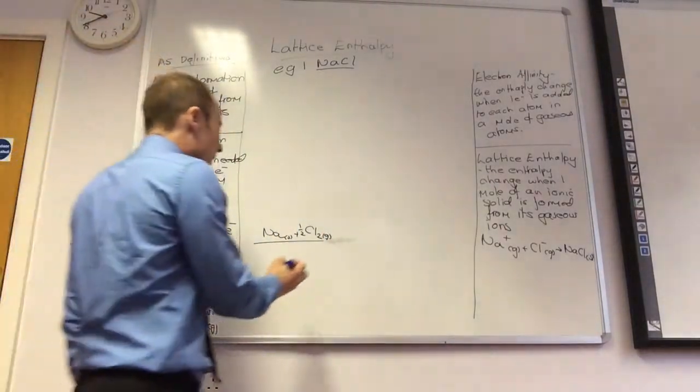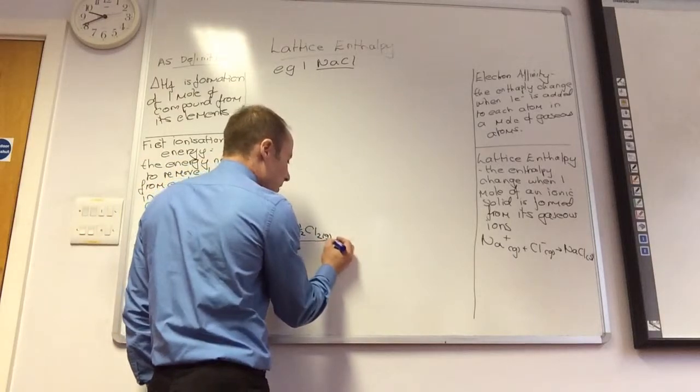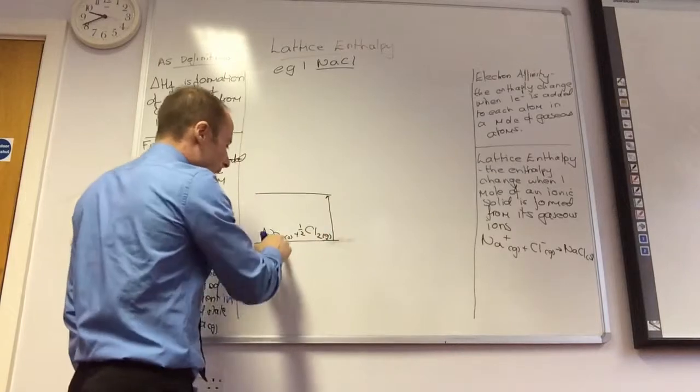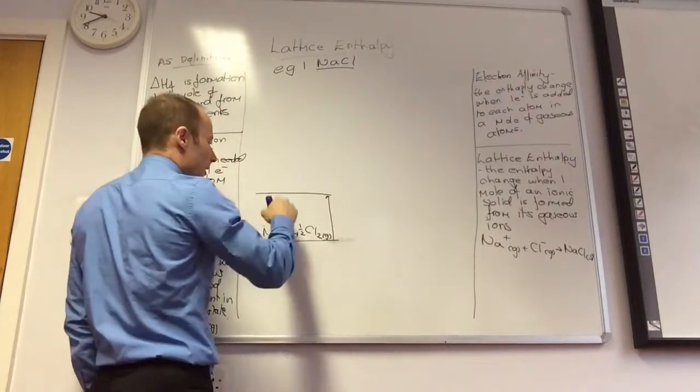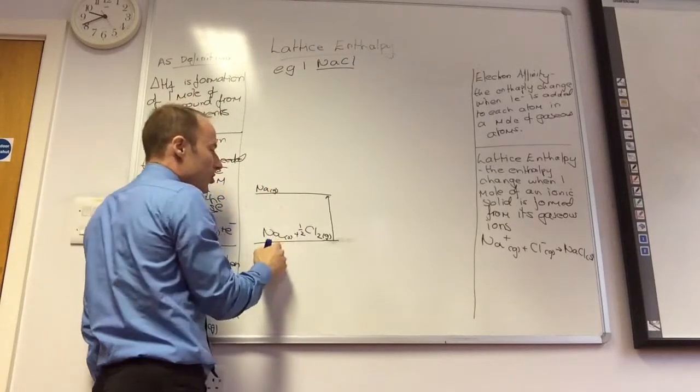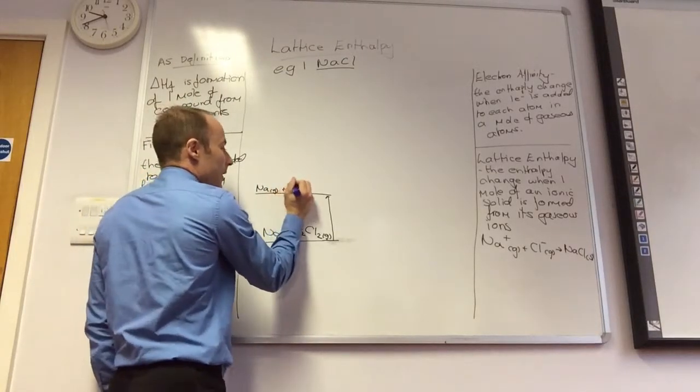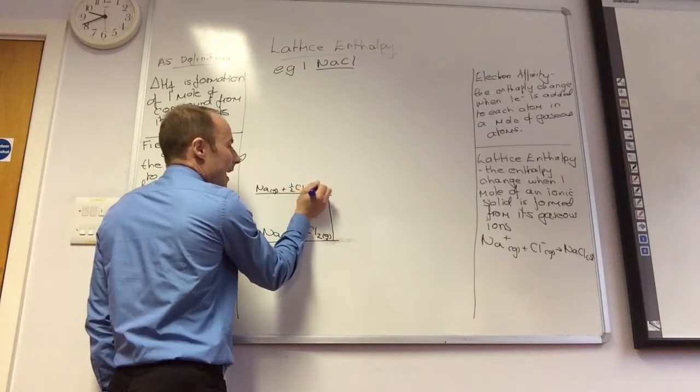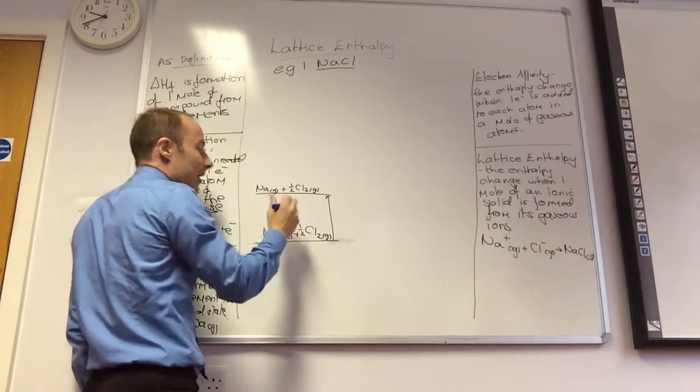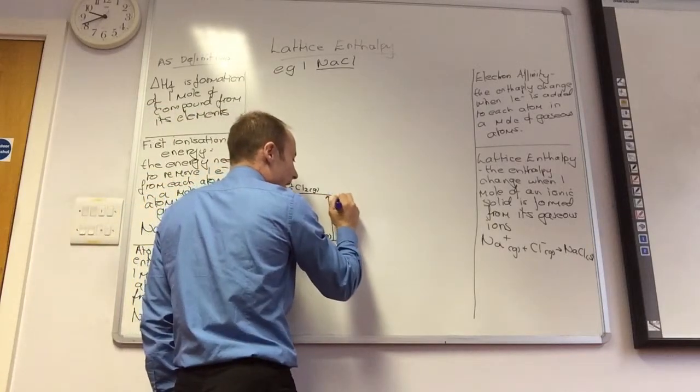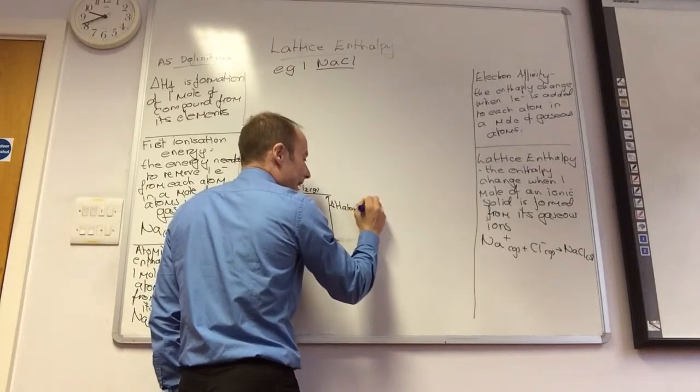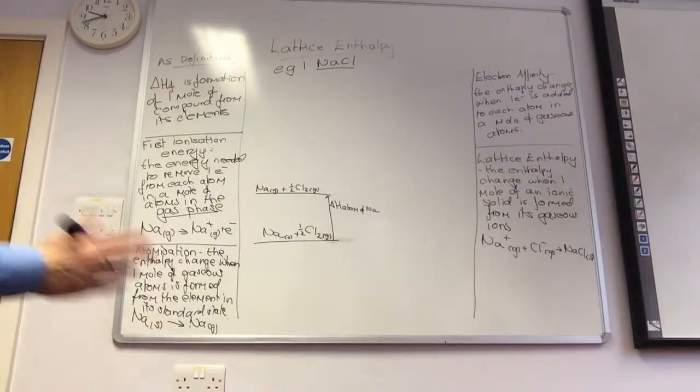Right, the first thing I'm going to do is I'm going to atomize sodium. So on the next line, I'm going to change sodium solid into sodium gas. So I change that to sodium gas. I haven't done anything to chlorine, so that stays the same. Sodium goes, so this is delta H atom of Na.